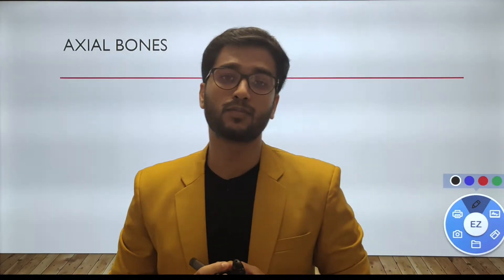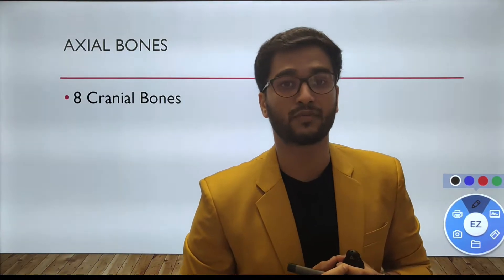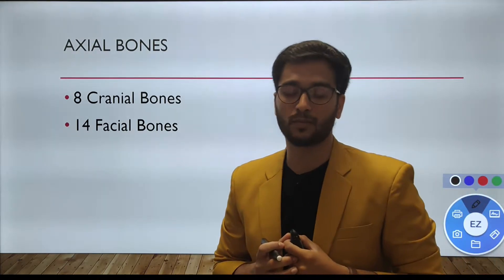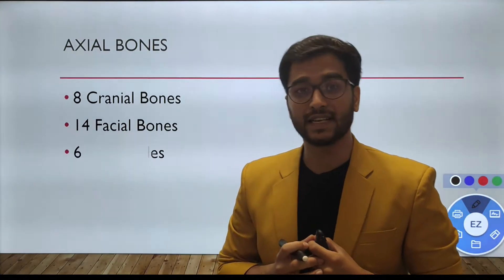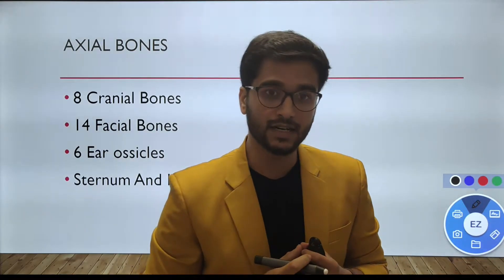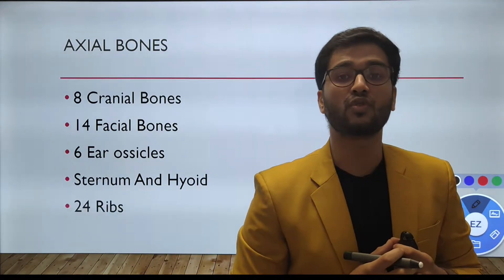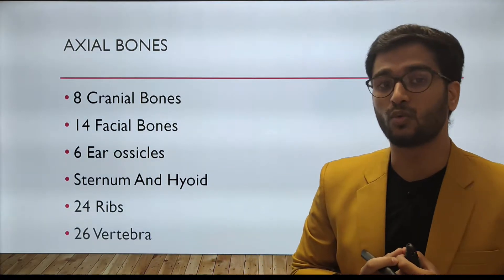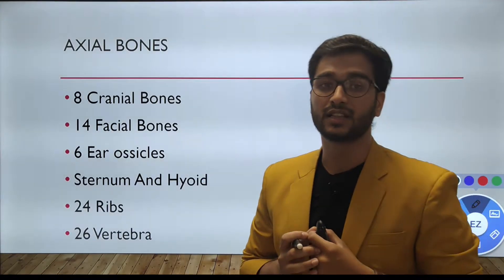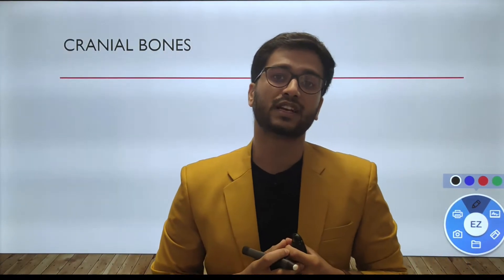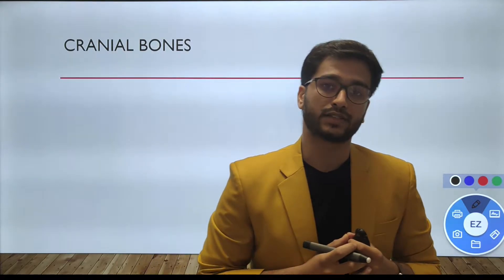The axial skeleton comprises 80 bones, among which 8 bones are of the cranium, 14 are facial bones, 6 are the ossicles, 1 hyoid and 1 sternum are present, and 24 ribs and 26 vertebrae come under the account of the axial skeleton.